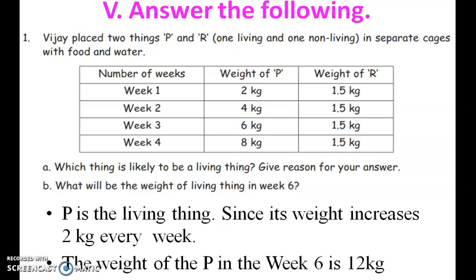Question: Which thing is likely to be a living thing? Give a reason for your answer. P is the living thing, since its weight increases by 2 kg every week, whereas the weight of R remains the same. Next question: What will be the weight of the living thing in week 6? The weight of P in week 6 is 12 kg.